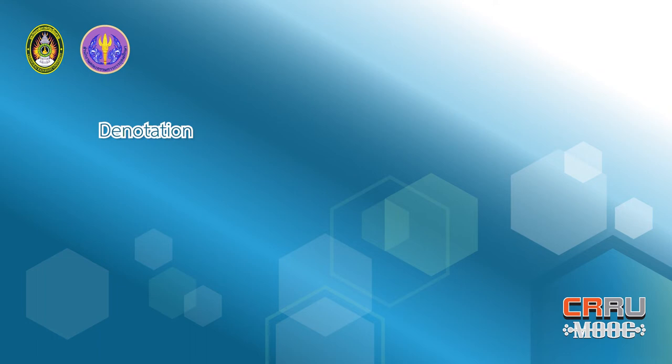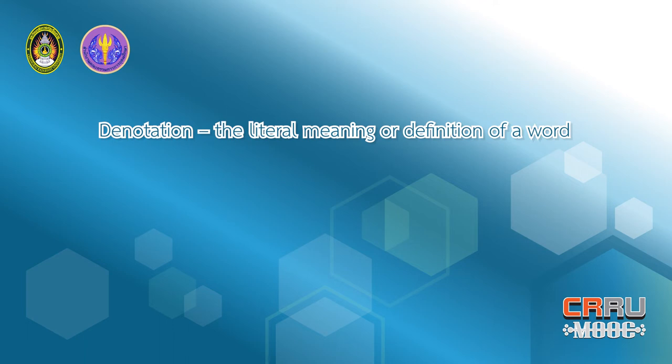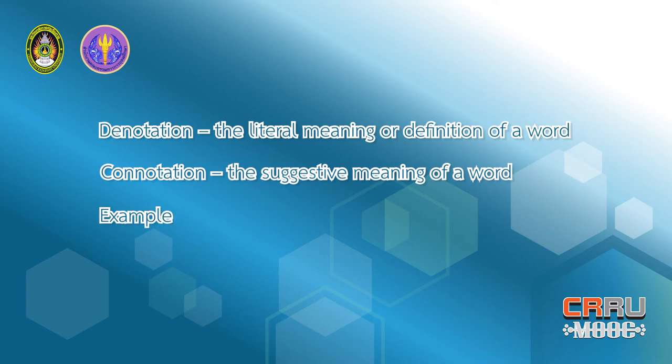Semantics in intercultural communication. Semantics is a system that associates words to meaning — it is the study of words. The most convenient and thorough source of information about the semantics of a language is the dictionary. Words have two dimensions of meaning: denotation, which is the literal meaning or definition of a word, and connotation, which is the suggestive meaning of a word. For example, the color red in Chinese and English carries different connotations.